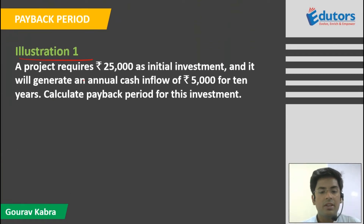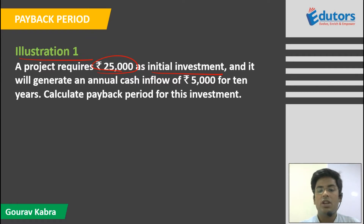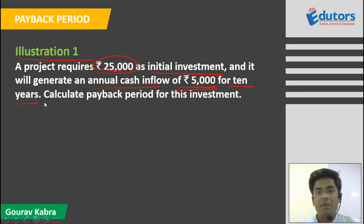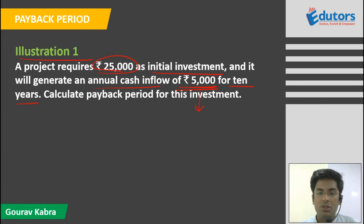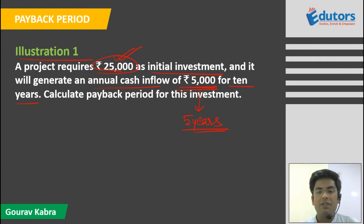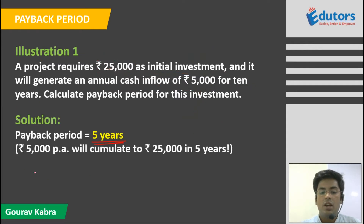In the first illustration, a project requires rupees 25,000 as initial investment and is expected to generate annual cash inflows of rupees 5,000 for the next 10 years. Since rupees 5,000 received every year will accumulate to rupees 25,000 in 5 years, the payback period is 5 years.